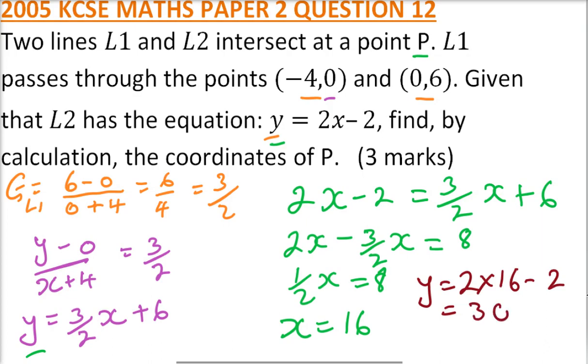So the coordinates of P, we have x is 16 and y is 30. So those are the coordinates of P, and you earn yourself 3 marks.